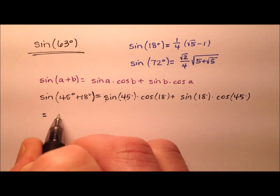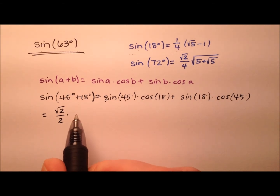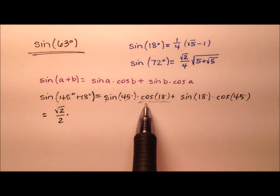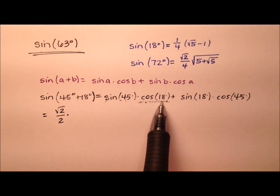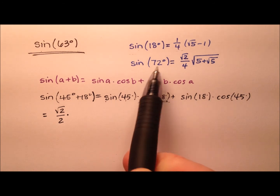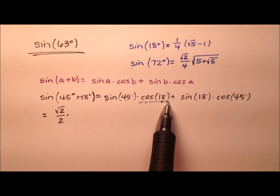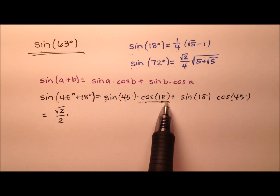The sine of 45 degrees is the square root of 2 over 2, and we multiply that by the cosine of 18 degrees. Cosine and sine have a nice relationship where the cosine of 18 degrees is the same as the sine of the complement, which is sine of 72 degrees. So I can substitute that value in for cosine of 18 degrees.